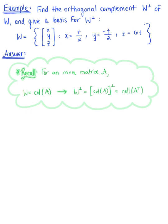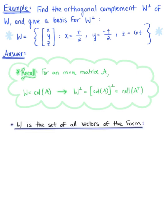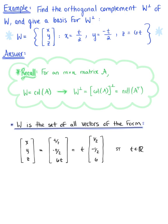Looking at this given subspace W, we can see that this subspace consists of vectors of the following form. We have the vector with components x, y, z, and this is such that x is defined as t by 2, that y is defined as minus t by 2, and that z is defined as 6t. We can pull that common scalar t to the front, which leaves us with the vector with components 1 half, minus 1 half, 6, and this is such that t is any scalar.